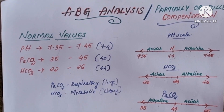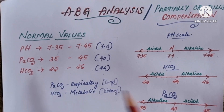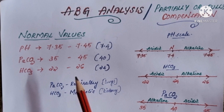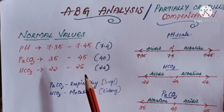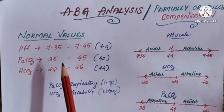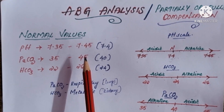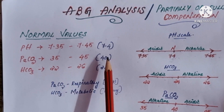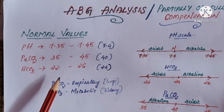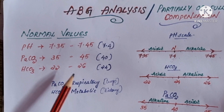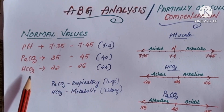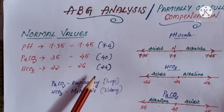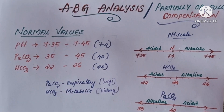For understanding compensation, we take a mean from the normal range. For pH, the range is 7.35 to 7.45, so we take 7.4 as the mean. PaCO2 is 35 to 45, so we take 40. Bicarb is 22 to 26, so we take 24 as the mean.